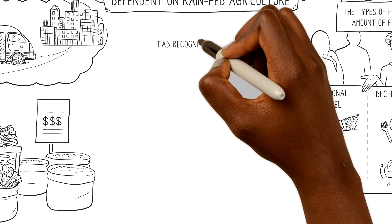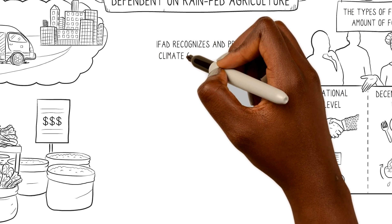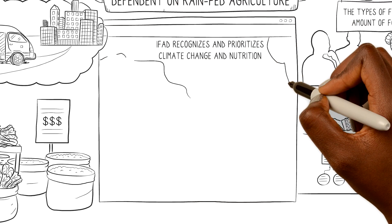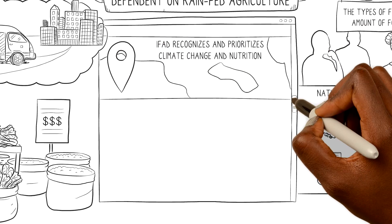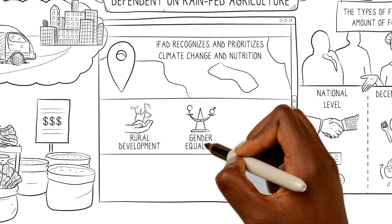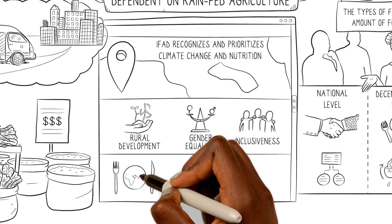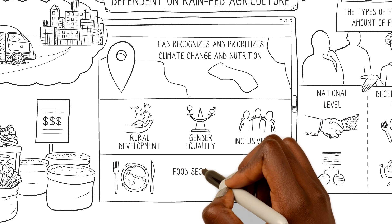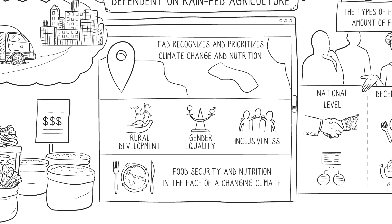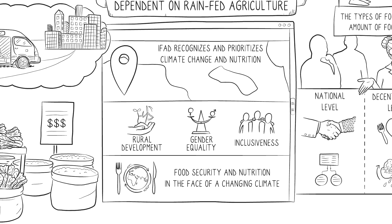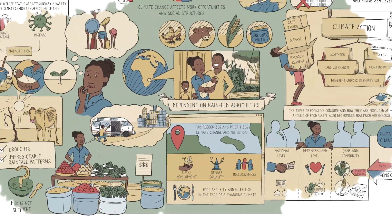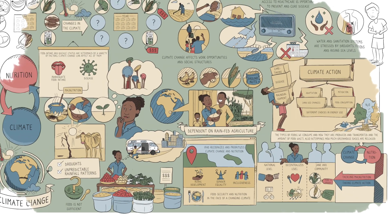IFAD recognizes and prioritizes climate change and nutrition by investing in transforming the lives of the most vulnerable rural communities. IFAD promotes rural development, gender equality, and inclusiveness to end hunger and poverty, food security, and nutrition in the face of a changing climate. This was an example from Zimbabwe, but these linkages can be found in other countries where IFAD operates as well.